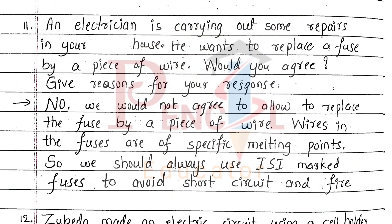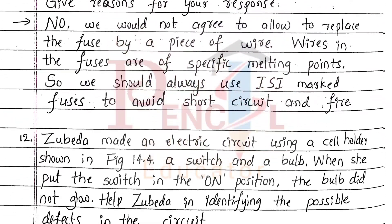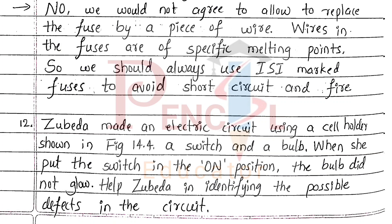Eleventh one, an electrician is carrying out some repairs in your house. He wants to replace a fuse by a piece of wire. Would you agree? Give reasons for your response. No, we would not agree to allow replacing the fuse by a piece of wire. Wires in the fuses are of specific melting points. So we should always use ISI marked fuses to avoid short circuit and fire.